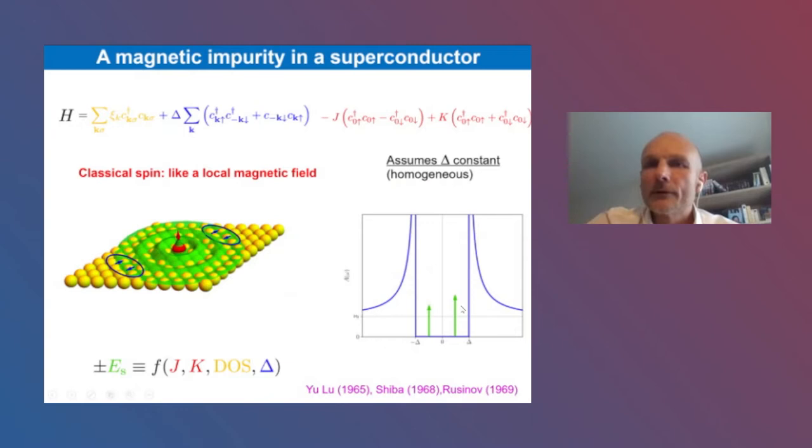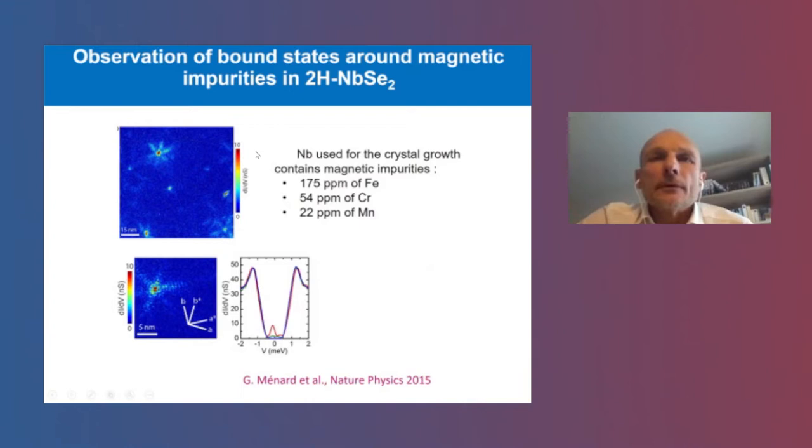The position of these Shiba bound states are a function of J, the magnetic coupling and the non-magnetic one. If you consider, for example, a 2D van der Waals magnetic superconductor, like niobium diselenide, which contains a small number of magnetic impurities—iron, chromium and manganese—this is typically what you will see.